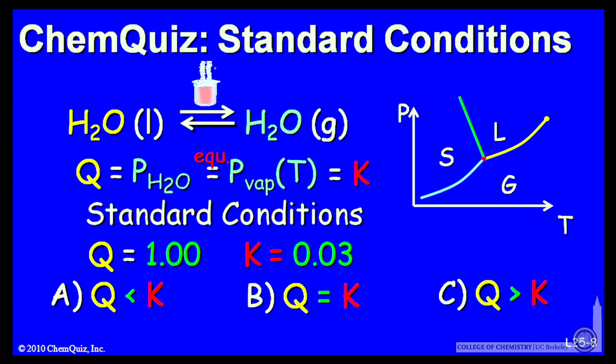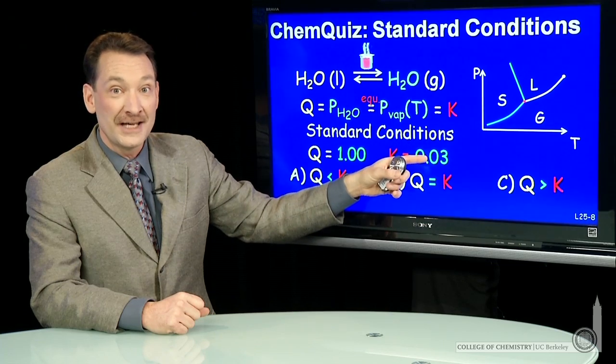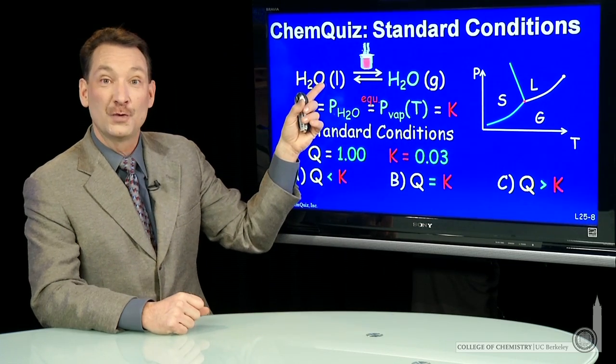But I've said I'm going to go to different conditions, the standard conditions, where the pressure is 1. So I have a Q that's greater than the known K. So if Q is bigger than K, I'm going to go back towards reactants.